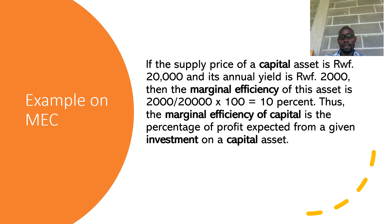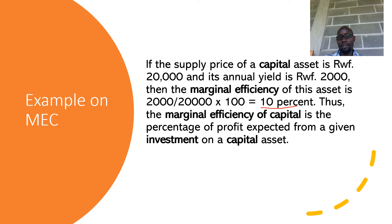Let's take an example of how to calculate the marginal efficiency of capital. Assume a capital asset is worth 20,000 Rwandan francs and its annual yield is 2,000 Rwandan francs. The MEC is calculated as: 2,000 divided by 20,000, multiplied by 100, which equals 10%. This means that every year this capital asset will give back 10% of its value. Thus, the marginal efficiency of capital is the percentage of profit expected from a given investment on a capital asset.